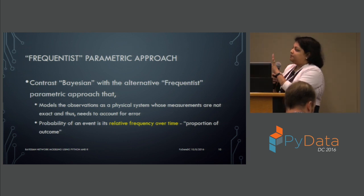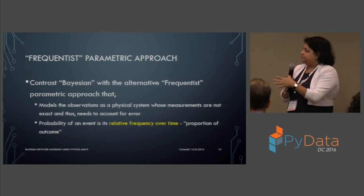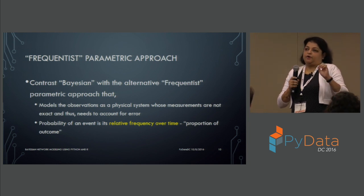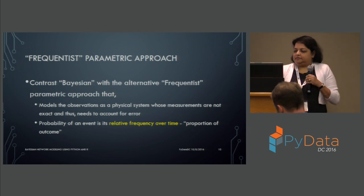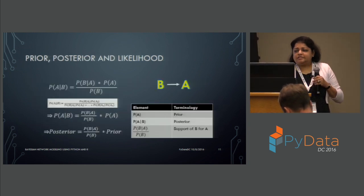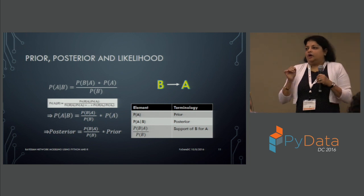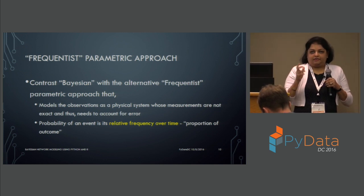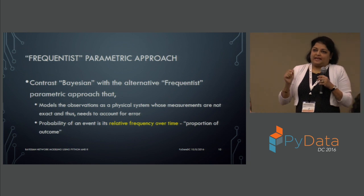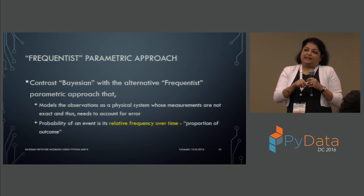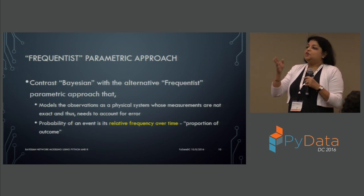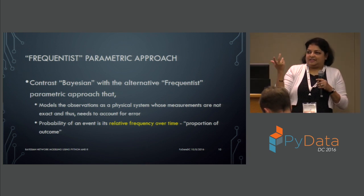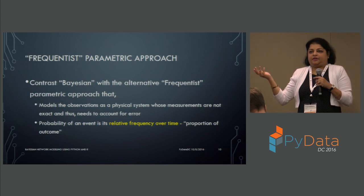In frequentist thinking, the probability of an event is the relative frequency over time — if you run something 100 times and it occurs 20 times, the probability is 0.2. In the Bayesian world, a different concept is used called belief. The belief says: I am sure it will occur 20 of 100 times because I have seen it occur 20 of 100 times. That's the main difference in how you think when working with Bayesian versus frequentist.